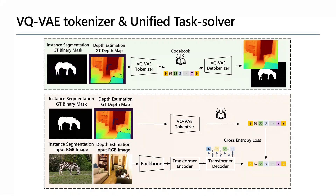Our model includes a lightweight VQVAE as tokenizer and detokenizer. First, our tokenizer encodes all vision tasks' ground truth outputs to a sequence of tokens. Next, a unified task solver will use input images to predict the output tokens, and this procedure is supervised by the tokenizer. Finally, we can use the detokenizer to convert the predicted tokens into output results.